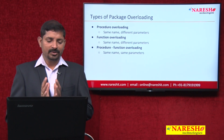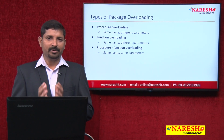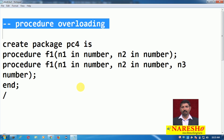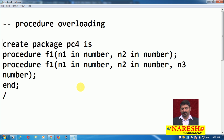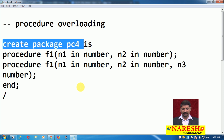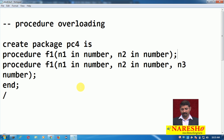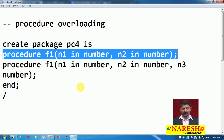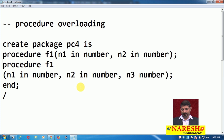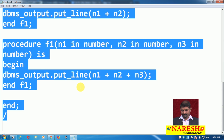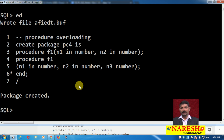Let us see examples of these. To start with, let us create a package to demonstrate procedure overloading, where multiple procedures share the same name with different parameters. I am going to create package pc4 — this is the package specification. It has two procedure objects both named f1: the first procedure has two parameters, and the second has three parameters. These procedures will add two numbers and three numbers respectively and return the output. The package specification has been created.